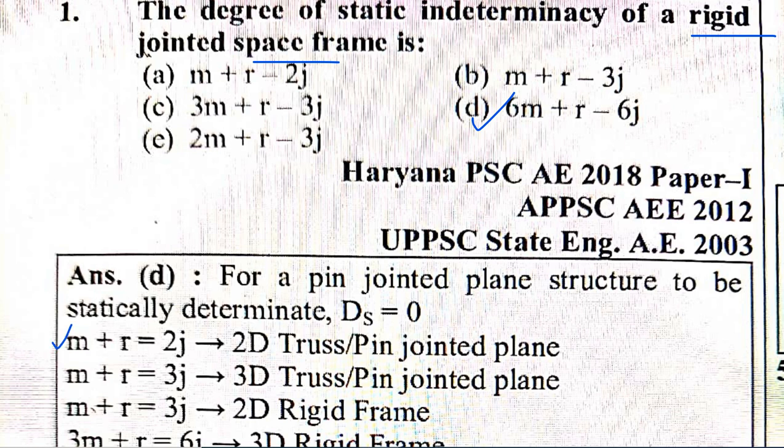For a 2D truss, the equilibrium equation is M + R = 2J, where M means members, R means reactions, and J means joints. For 2D there are two equilibrium equations: summation of Fx = 0 and summation of Fy = 0.